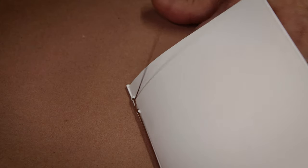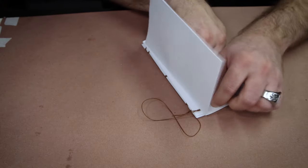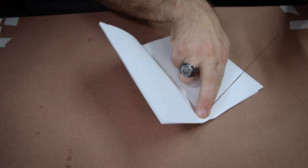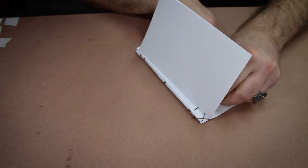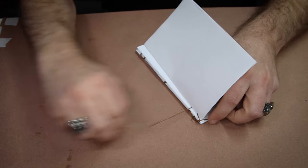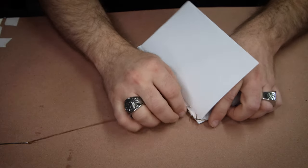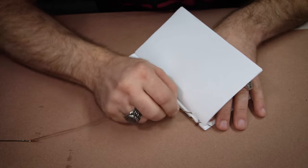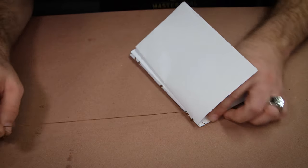Now with the first signature, we went down and back. With the following signatures, we're going to go down, and then we're going to add the next signature, and then we're going to go back. And then we're just going to work our way back and forth until we get all the signatures secured to the text block.